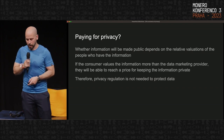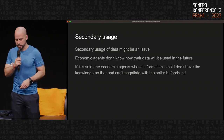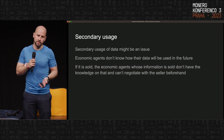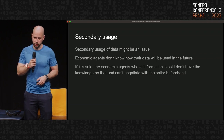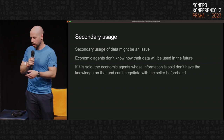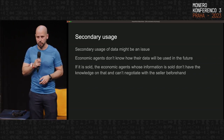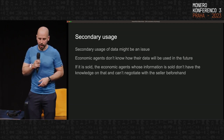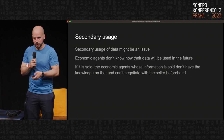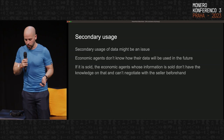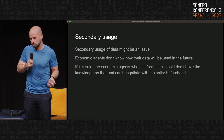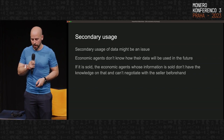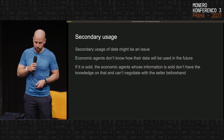Now let's go to the arguments for privacy regulation. One argument often used is that the secondary usage of data could be an issue — meaning that if the buyer of the information plans to sell it to some third party, the original economic agents can't really defend against that, because they don't even have the information that their data is being sold. So the argument goes that we might need privacy regulation to protect economic agents from these kinds of transactions.